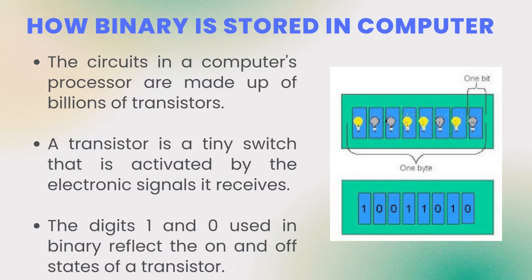Computers have processors, and these processors have circuits with billions of transistors. A transistor is a tiny switch that is activated by an electrical signal. As you can see in the diagram, binary values of ones and zeros — for example 10011010 — are represented where ones are shown as an on bulb and zeros as an off bulb. All 8 bits are stored in the transistors of the computer processor.